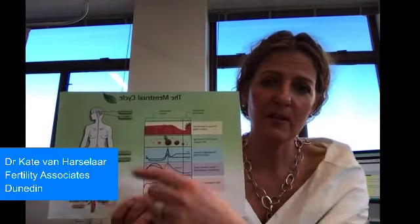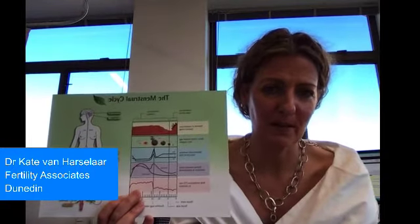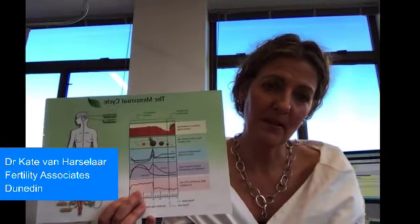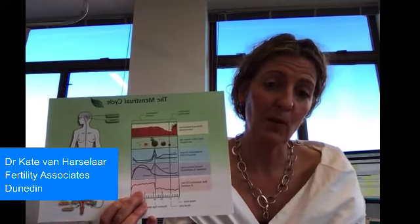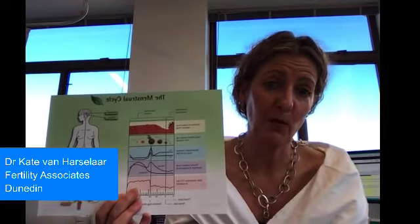If we look at the process and start at the top, there's an area in the brain called the hypothalamus, and that hypothalamus secretes a hormone called gonadotropin-releasing hormone, or GnRH.